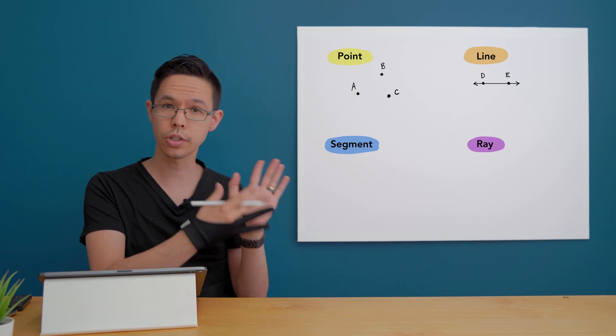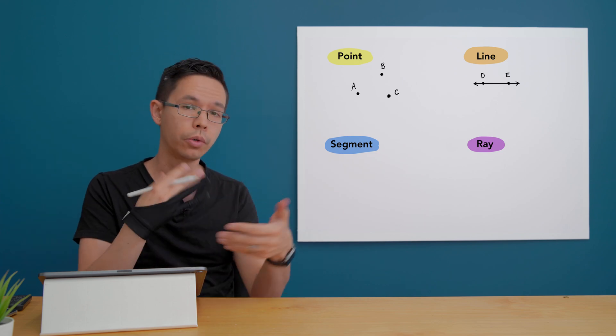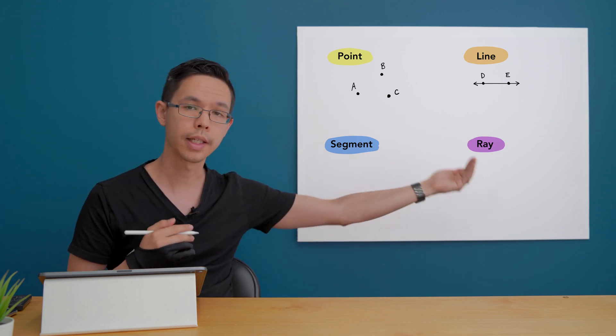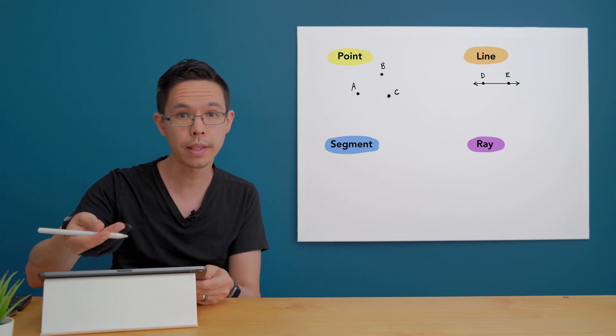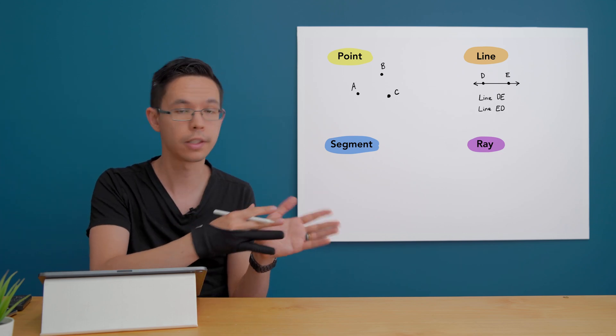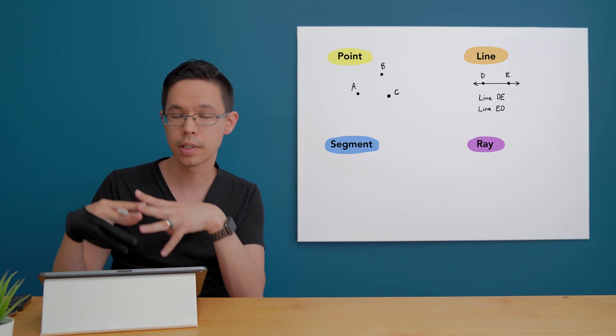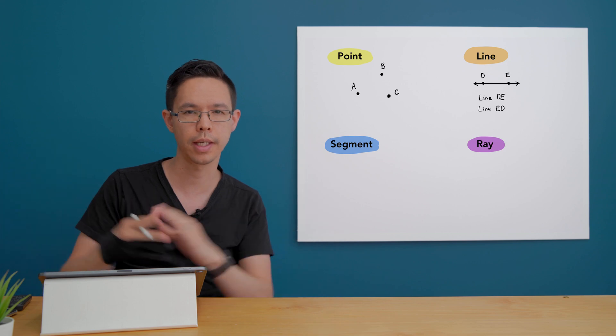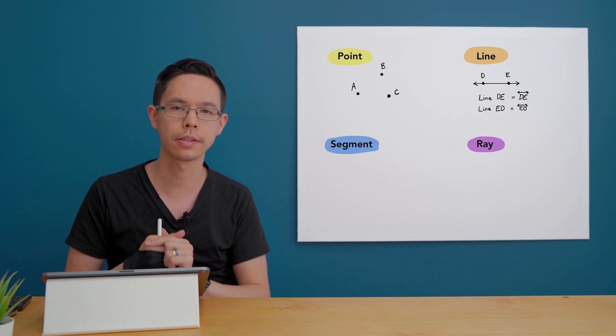So in the illustration I just have on screen now I've drawn the line DE or I could reverse the letter sequence so I could say the line ED and that's still the same thing because it's symmetrical. I can even shorten it once more just using symbols so the symbol for a line has little arrow heads on the ends.